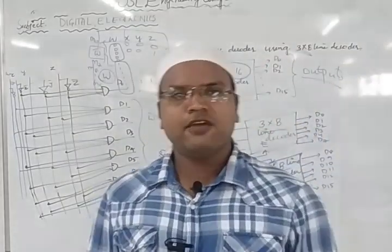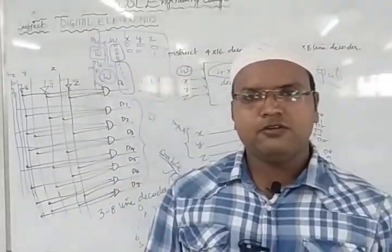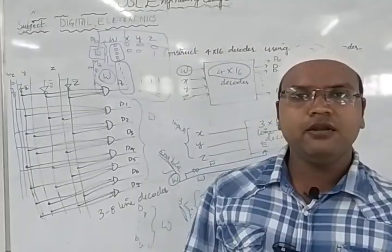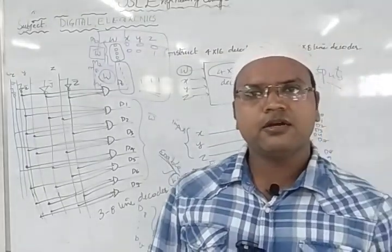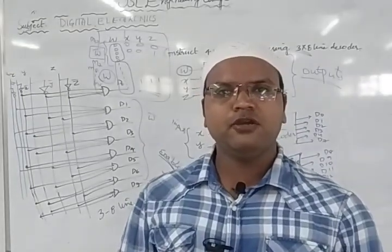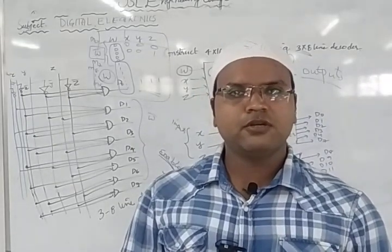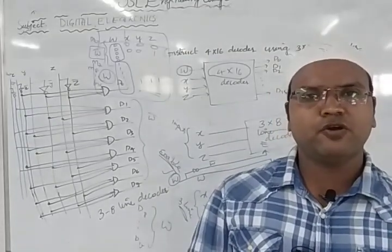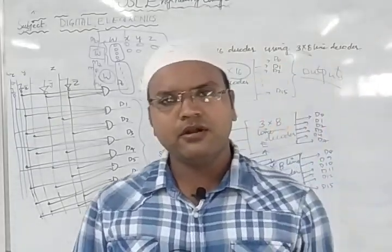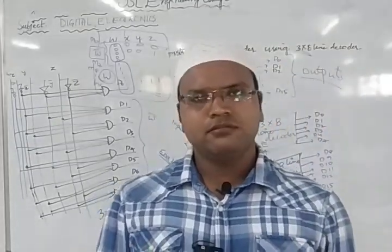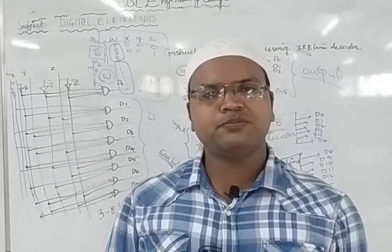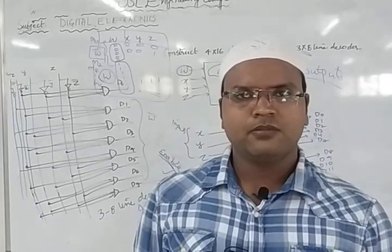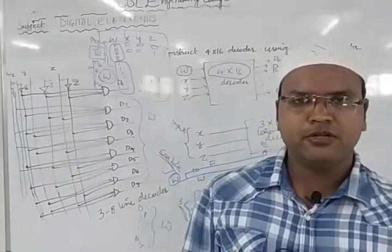If you have any queries, post them in the comment box or email me using the mail ID given in the description. This concludes the topics of demultiplexer and decoder. In the next class we will complete encoder and do two to three more problems to finish unit two. Thank you — that's it for today's class.